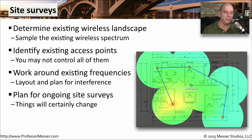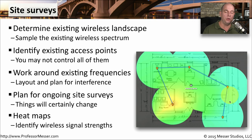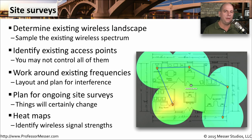One thing you can do is to perform something like a heat map. This is a piece of software that allowed me to walk around a particular area. You could even put the diagram of the area as the background. And as you move, it knows exactly where you are in relation to the access point, and it can start to show you in color view exactly where the signal is very good and where the signal is very bad. You can walk inside or outside of your building and get a better understanding of exactly where the frequencies are in use for your wireless network.